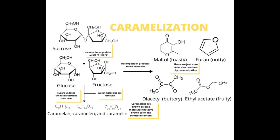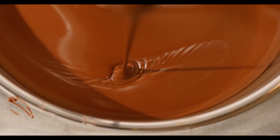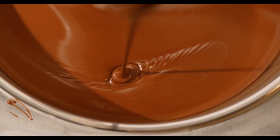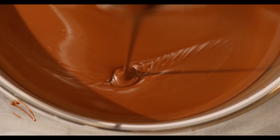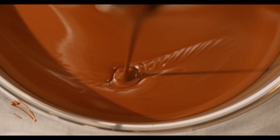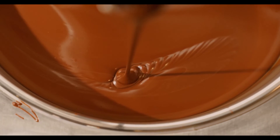There are three polymer groups responsible for the brown color during caramelization: caramelized C₂₄H₃₆O₁₈, caramelized C₃₆H₅₀O₂₅, and caramelized C₁₂₅H₁₈₈O₈₀. During the process, highly volatile components such as diacetyl are released, producing the characteristic caramel flavor.